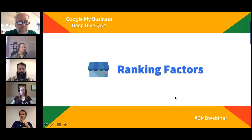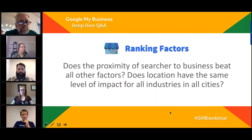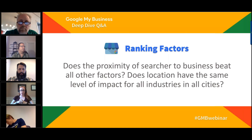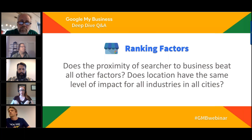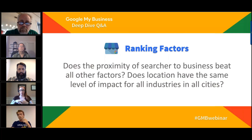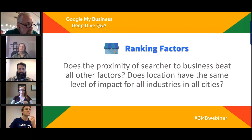The webinar moves to ranking factors. Joy is asked: Does proximity of the search to the business beat all other factors? And does location have the same level of impact for all industries and cities? Joy confirms proximity of the searcher is definitely the strongest ranking factor overall, but that doesn't mean results are simply ordered by distance — there are hundreds of ranking signals, like pieces of a 200-piece puzzle. Proximity may be the biggest piece, but having all other signals working for you can help you rank higher even if you're not the closest. It was the number one ranked factor in Moz's local search ranking factors survey.